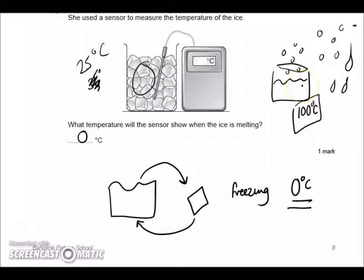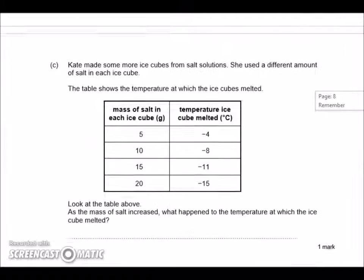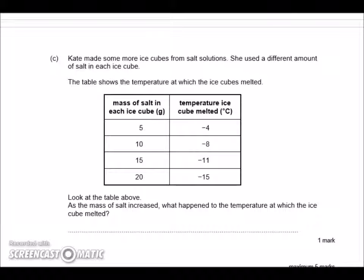Kate made some more ice cubes from salt solutions. She used a different amount of salt in each ice cube. So here's what she did - she put 5 grams in some, 10 grams in others, 15 grams in others, and 20 grams. They melt at different temperatures.